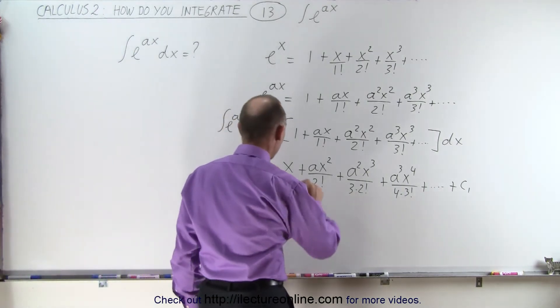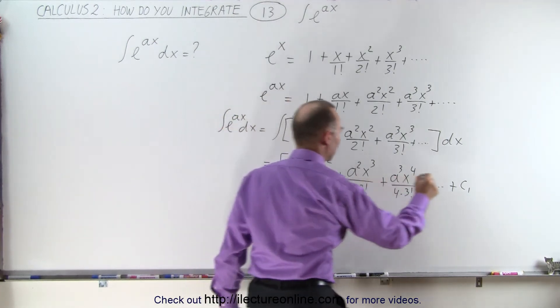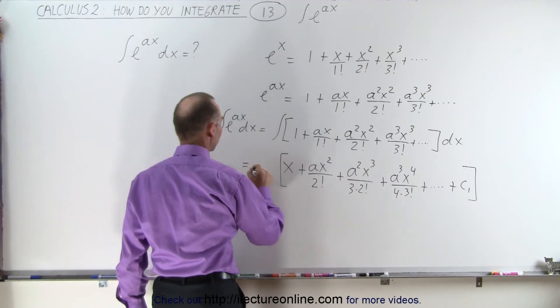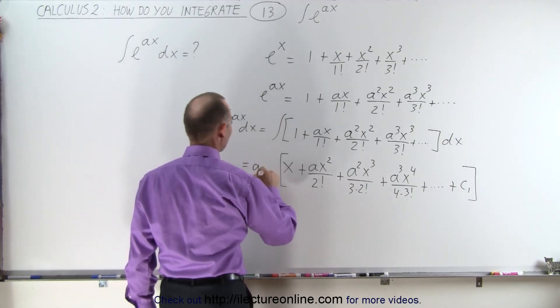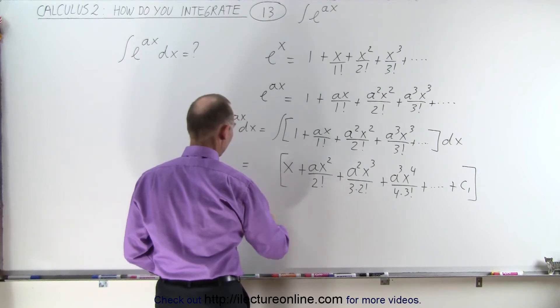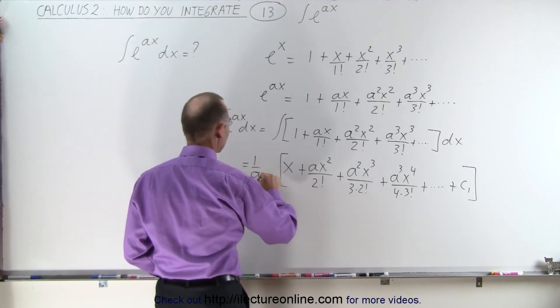We can multiply and divide the whole right side by—I'm going to move this equal sign over a little bit here—how about 1 over a times a.